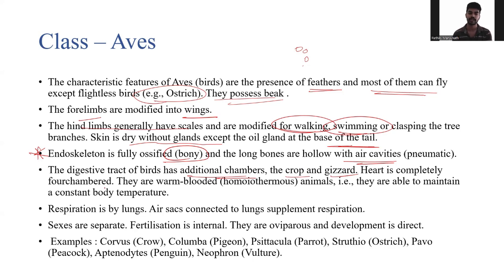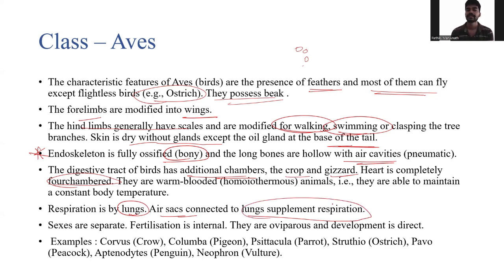The heart is completely four-chambered, and birds are warm-blooded animals — homeotherms — able to maintain a constant body temperature. Respiration is through the lungs, with air sacs connected to the lungs for respiration. Sexes are separated; fertilization is internal; they are oviparous with indirect development. Examples: Corvus (crow), Columba (pigeon), parrot, ostrich, Pavo (peacock), Eudyptes (penguin), and vulture.